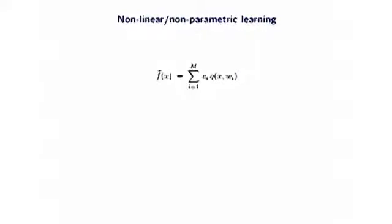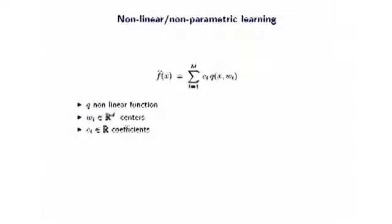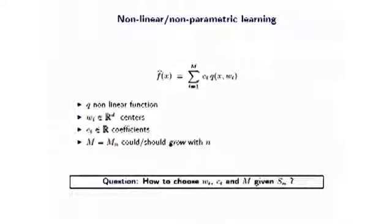I will give a short introduction to learning with kernels, which is particularly important for our work, and then state our result. Since we know very little about F-star, we want a model that is very general — non-linear and non-parametric. Q is a non-linear function, W_i are the centers, C_i are the coefficients, and M is the number of centers. For a non-parametric estimator, M should grow with the number of points.